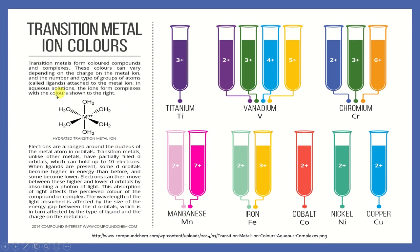This is an example of a coordination compound — a complex of a transition metal. M here can be any of these metals. These are the ligand molecules — in this example, water molecules. The metal ion is linked to six water molecules. If we change the metal, we can see different colors. Titanium gives purple, where manganese gives pink.